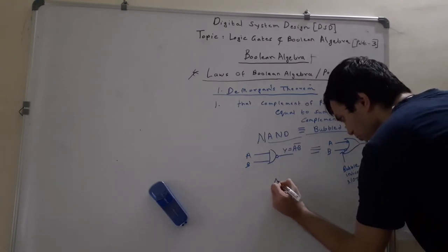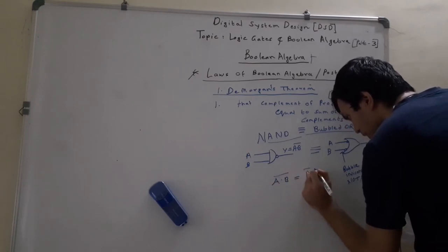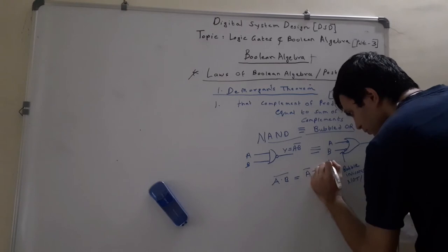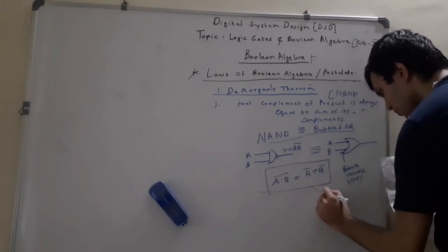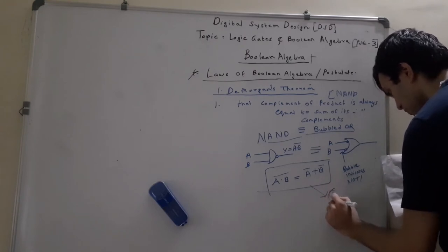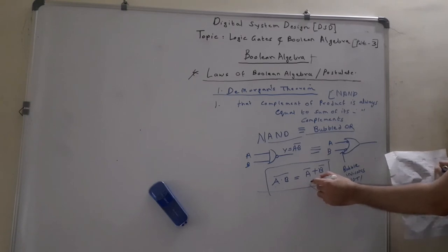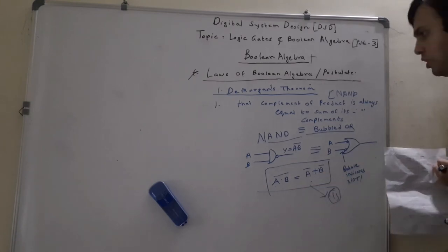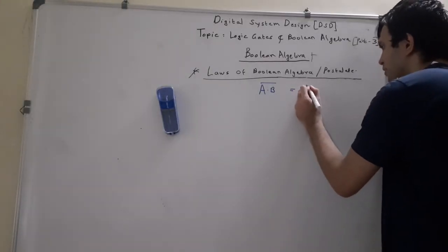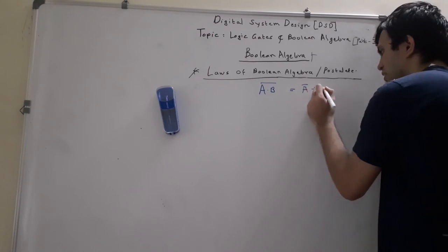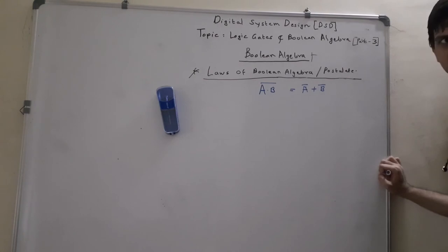The theorem statement is: A dot B, the whole complement, is equal to Ā plus B̄. This is De Morgan's first theorem. If you want to prove this law, you can prove it using a truth table. Let us now prove this first De Morgan's theorem using a truth table.